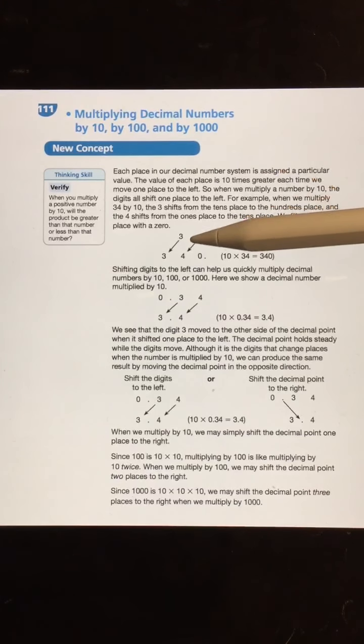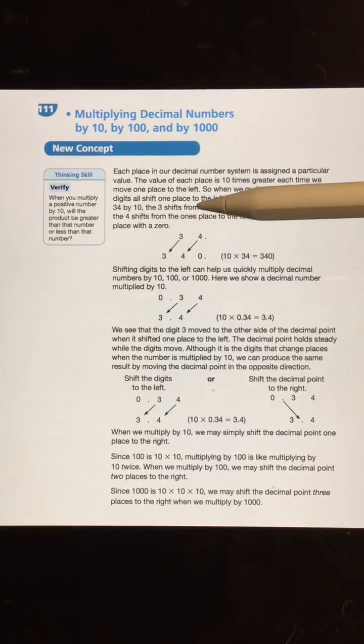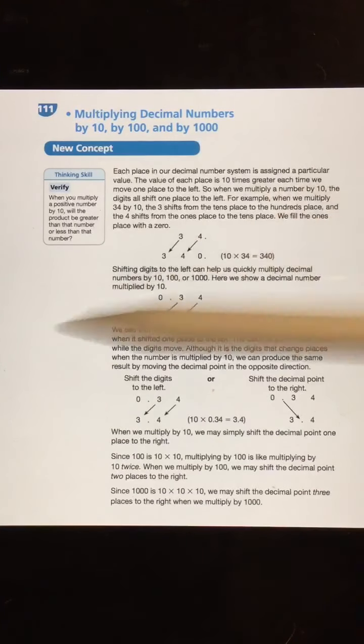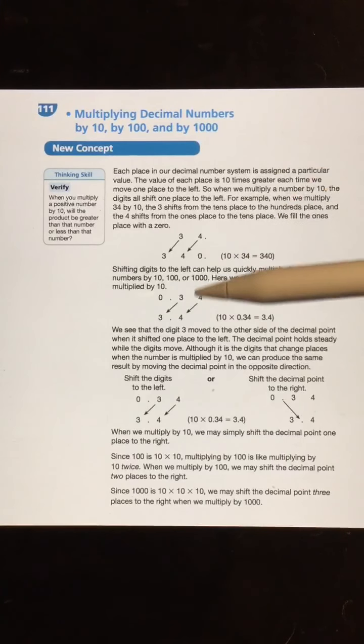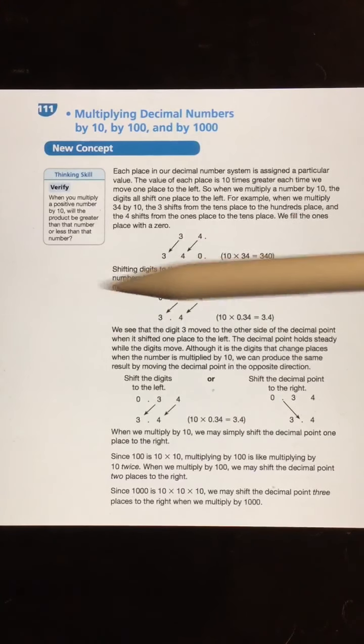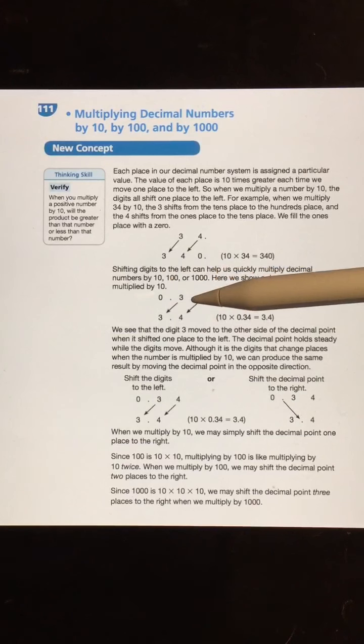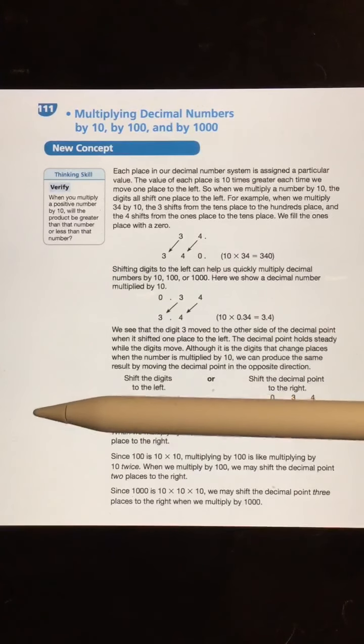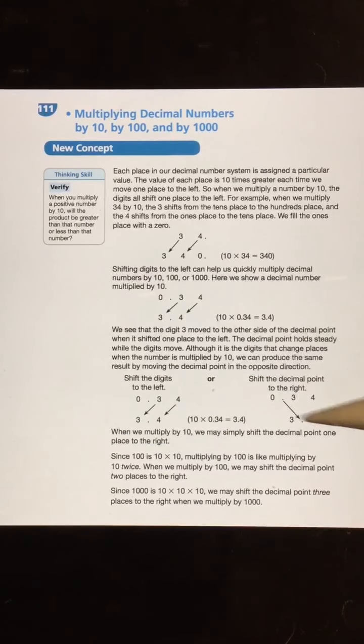So when we multiply, we are very talented at this. When we multiply 10 times 34, we multiply the 1 times the 34, we get 34, we put the 0 on the end. The digits all shift to the left. When we are multiplying 34 hundredths times 10, the digits still shift to the left, but the decimal shifts to the right. So we end up with 3 and 4 tenths. All the digits shift to the left and the decimal point to the right.